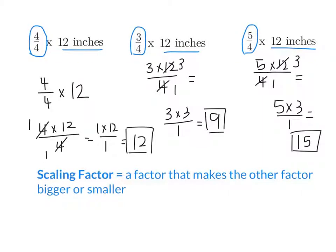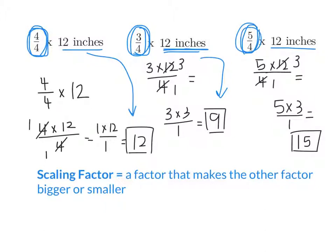Now let's find out how these scaling factors actually affect the 12 inches of string by doing the multiplication. When I had a scaling factor of 4 fourths, it changed the 12 inches to 12 inches — it didn't change. When my scaling factor was 3 fourths, I started with 12 inches but ended up with only 9 inches — it made it smaller. With 5 fourths as my scaling factor, I started with 12 inches but ended up with 15 inches — it got bigger.